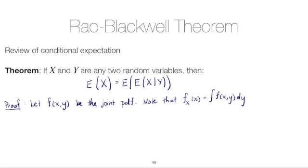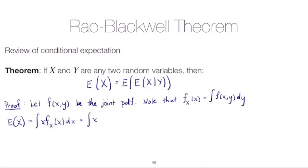Let's start with the left-hand side of the theorem. The expectation of X is, by definition, the integral of X times the PDF of X, with respect to X. Now we'll try to work our way to the expectation of the expectation of X given Y. The first thing we can do is plug in the marginal PDF of X as an integral over the joint PDF, integrating over Y, while still integrating on the outside with respect to X.